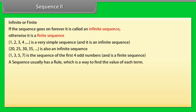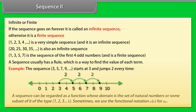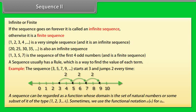A sequence usually has a rule, which is a way to find the value of each term. For example, the sequence 3, 5, 7, 9, and so on starts at 3 and jumps by 2 every time. A sequence can be regarded as a function whose domain is the set of natural numbers or some subset of it of the type 1, 2, 3, up to k. Sometimes we use the functional notation a(n) for an.